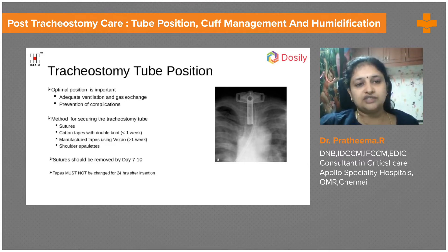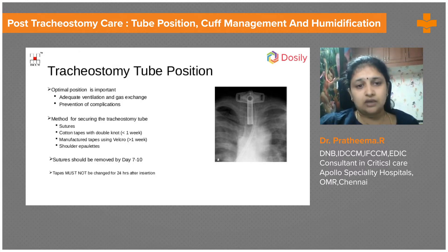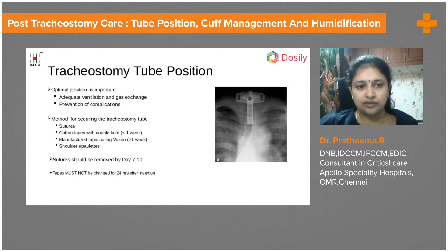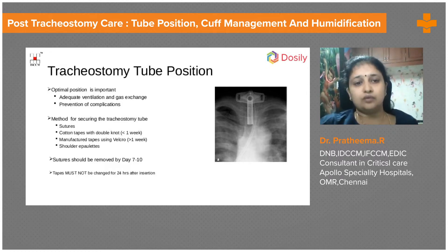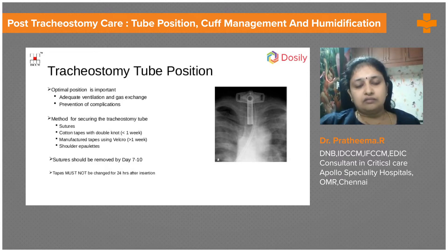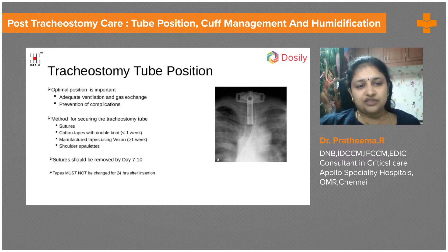How do we ensure optimal tube position? We carefully place the tracheostomy tube under bronchoscopic guidance using the needle wire technique, and in surgical tracheostomy it is an open technique through the midline. The tube must be kept in position and secured well with sutures. It should sit in the midline, not hitting the walls, with flanges equally on both sides so the tube is not pulling to one side.